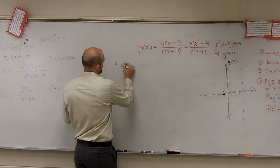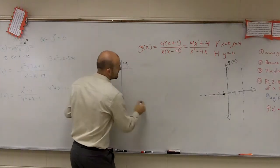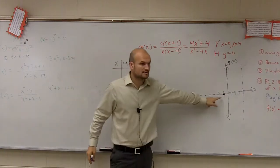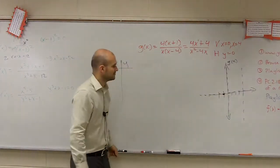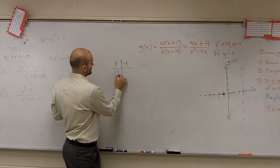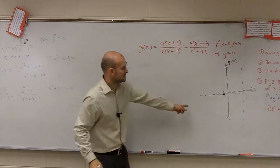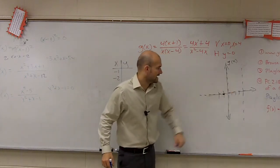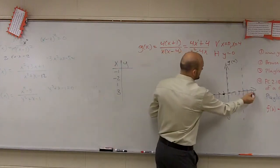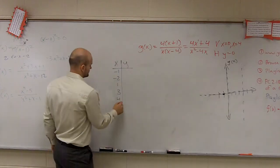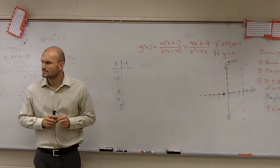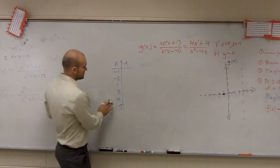So we'll do an xy table. Let's pick two points to the left of 0 — we already know negative 1, so that works. Then let's do negative 2. Then let's take two points to the right: how about 1 and 3? And then we need two points to the right of the asymptote at 4 — let's do 5 and 6.